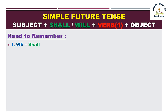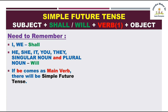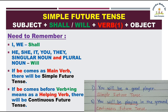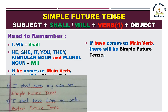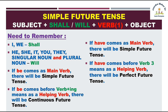Yaad rakhne ki baatein: I aur we ke saath shall ka istamal kiya jata hai agar future tense dikhana ho; remaining pronouns aur nouns ke saath will ka istamal hota hai. Agar be sentence mein as a main verb aaye — shall be / will be — aur iske saath koi extra verb na ho, toh simple future tense hai. Lekin agar shall be / will be ke saath verb+ing aaye toh continuous future tense hai. Agar shall have / will have as a main verb aaye toh simple future hai, lekin agar unke baad verb third aaye toh perfect future tense hai.